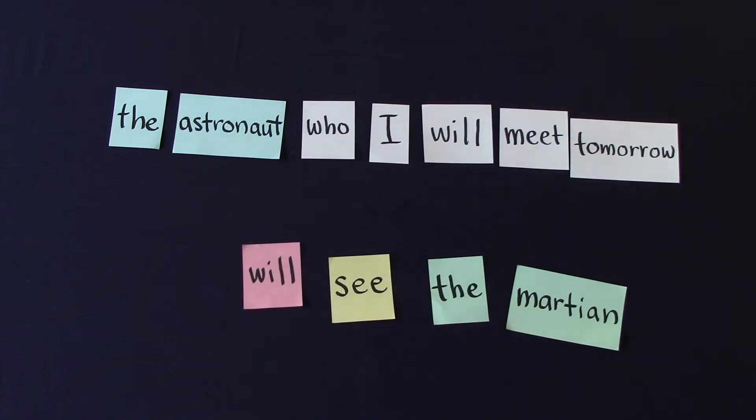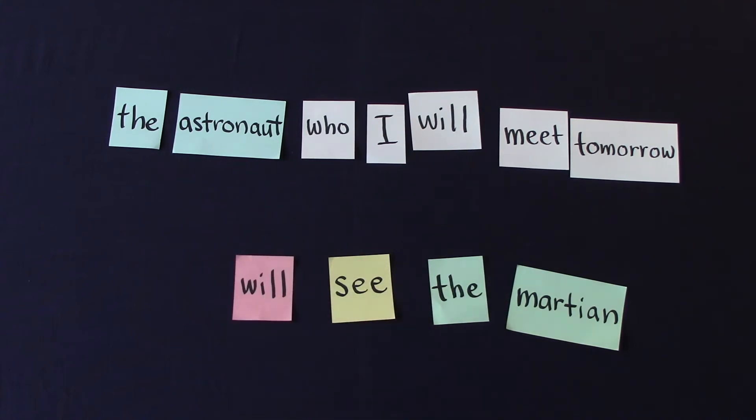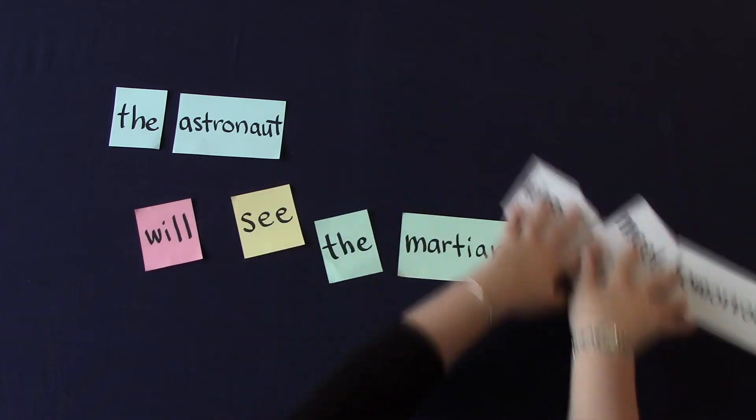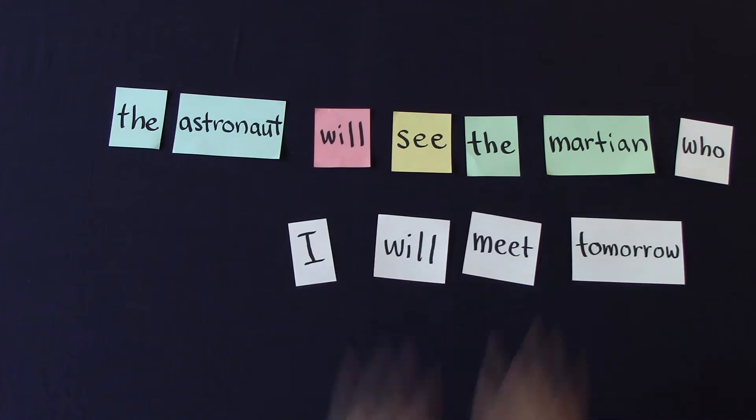We need to figure out a way to represent the difference between the first will and the second will. It's not going to work to just say move the second will, because we can also make a sentence that looks like this, where will number two has become will number one and vice versa.